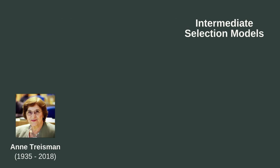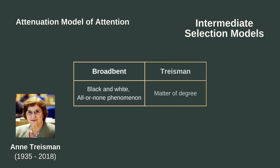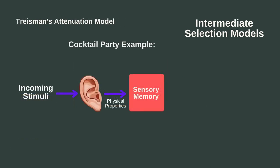To help address this issue, Anne Treisman, a student of Broadbent, came up with a modified version of Broadbent's model called the attenuation model of attention. While Broadbent saw selective attention as a black or white, all-or-none phenomenon, Treisman saw it as a matter of degree. Treisman, just like Broadbent, argued that in our cocktail party example, the physical characteristics of the conversation and the background noise are processed.